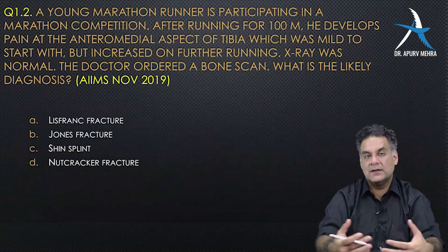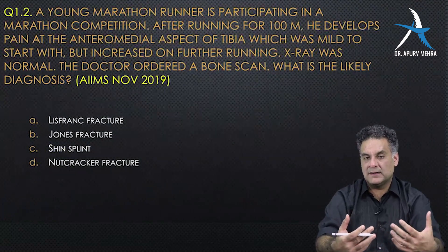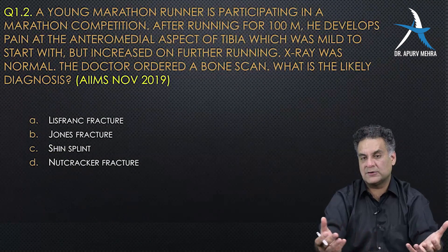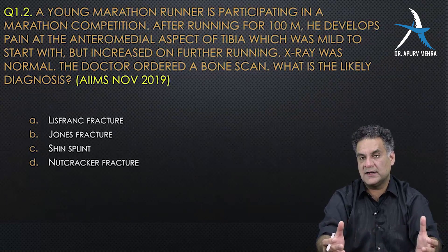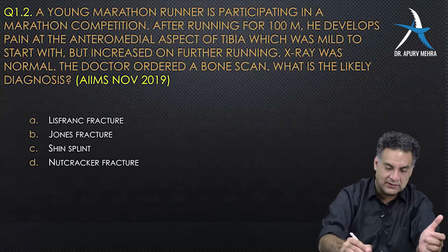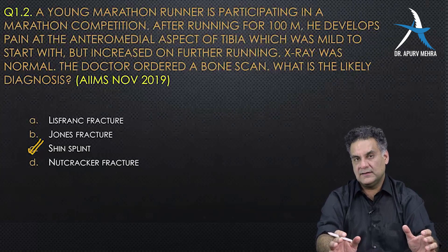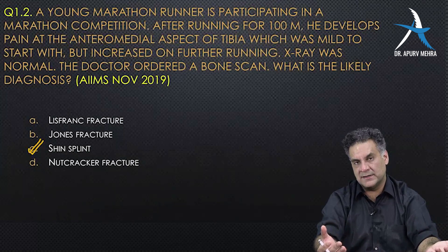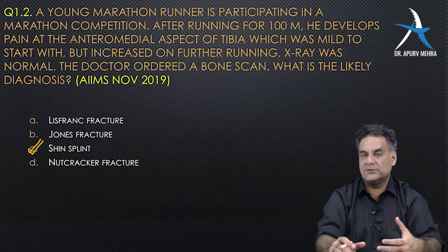Question number two: a young marathon runner participating in competition has pain in the anteromedial aspect of the tibia — mild to start but increasing on further running. X-ray was normal; doctor ordered a bone scan. Diagnosis is shin splints — this is classically a stress fracture. MRI would have been an option; bone scan can also be done. X-rays are normal because initially you only see marrow changes.